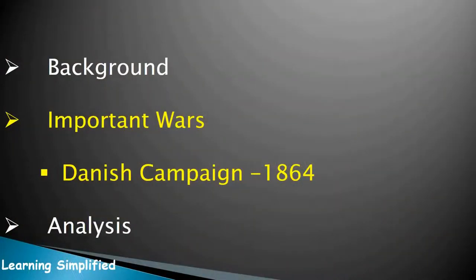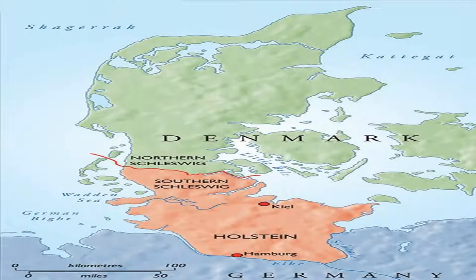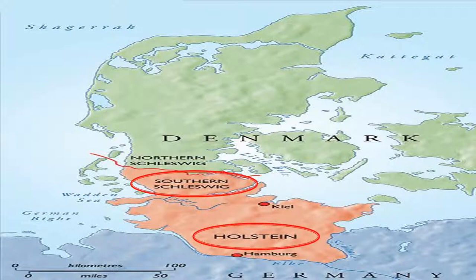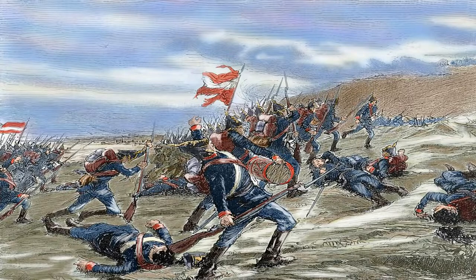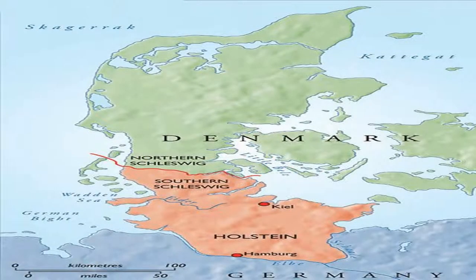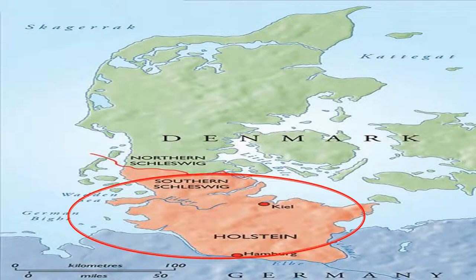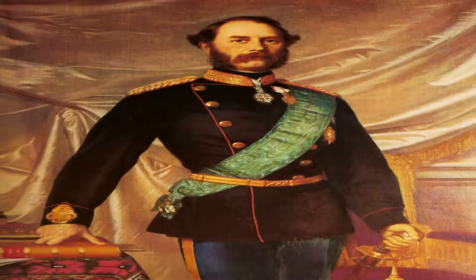Denmark was a kingdom then, having two duchies in the south. A duchy is a smaller sovereign territory inside a kingdom, the ruler of which is called a Duke, or Duchess in case of a woman. These two duchies were Schleswig and Holstein. An earlier war between the Kingdom of Denmark and the German Confederation had already been fought from 1848 to 1852 over the control of these duchies. As a result of that war, according to the London Protocol Treaty, these two duchies were mutually accepted as sovereign territories by the Kingdom of Denmark and the German Confederation. However, the new Danish king, Christian IX, reclaimed these duchies in 1863 and tried to occupy them.